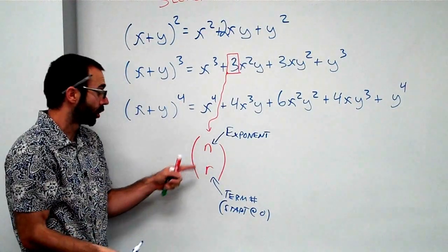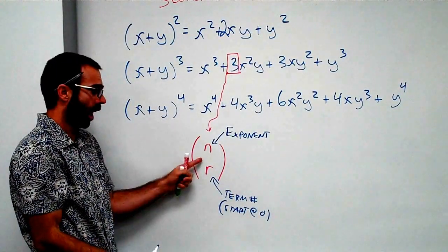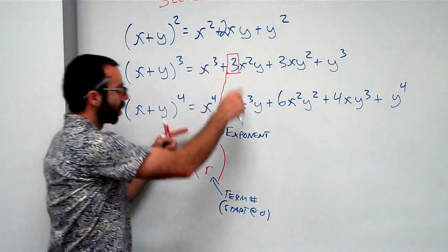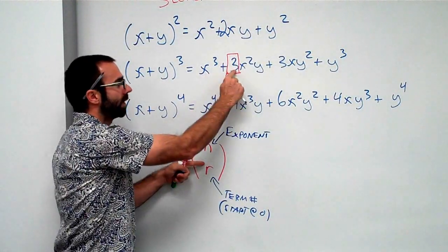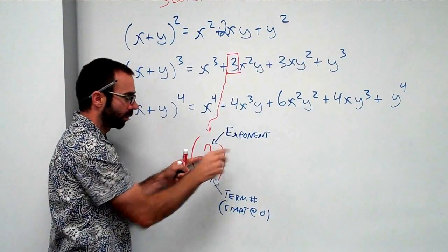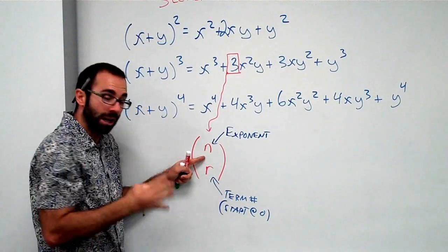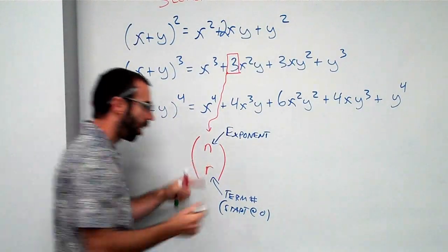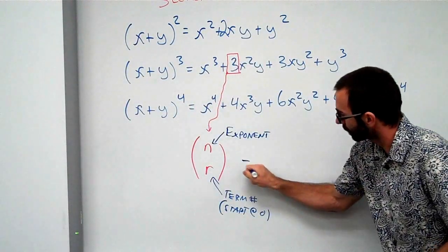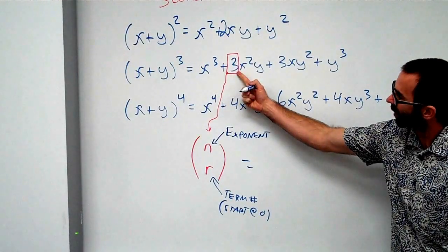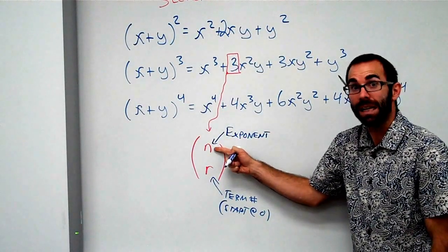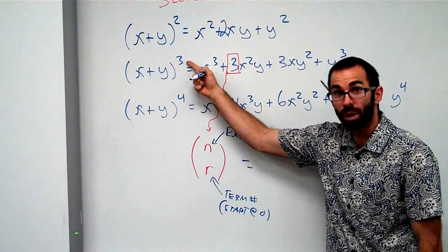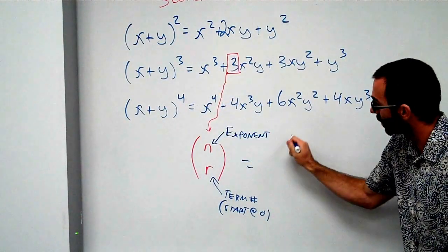If we're going to find this, we're going to use this formula right here. It's really a combination - it's kind of like what the general form is. We're going to say this is n choose r. If I look at the theorem here, what's my exponent? If I come over here, my exponent is 3. My n is going to be 3.